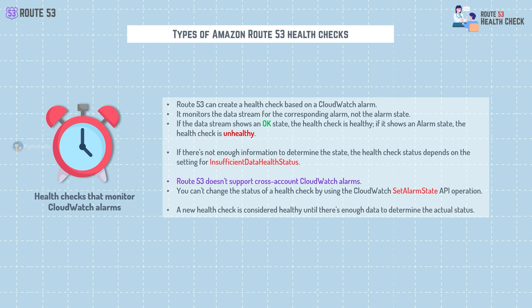You can also use CloudWatch to monitor things like server performance or disk space, and with AWS Route 53 you can create a health check based on a CloudWatch alarm. The health check monitors the data stream for the corresponding CloudWatch alarm. If the data stream shows an OK state, the health check is healthy. If it shows an alarm state, the health check is unhealthy.